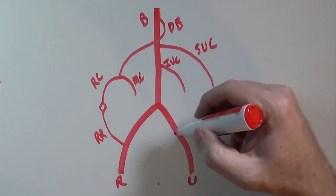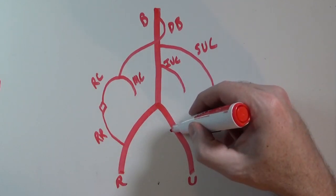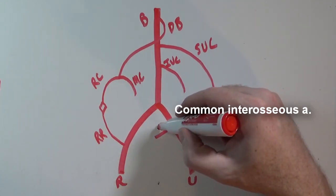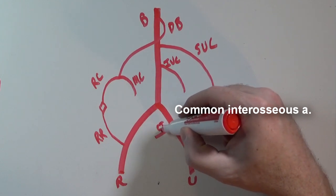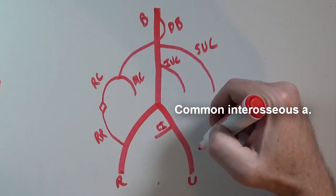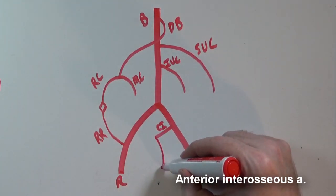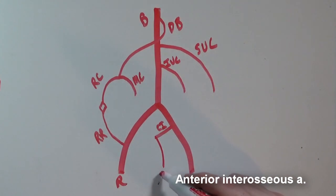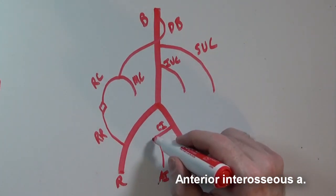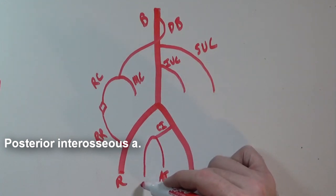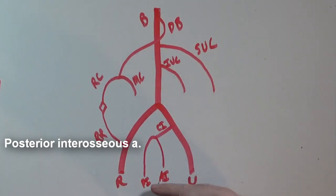Off the ulnar artery we have the common interosseous artery, which branches into the anterior interosseous artery (AI) and the posterior interosseous artery (PI).